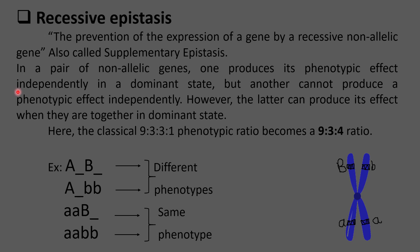In the case of recessive epistasis, there is a pair of non-allelic genes of which one produces its phenotypic effect independently when it is in a dominant state, while another cannot produce a phenotypic effect independently — this particular gene needs the supplementation of the other non-allelic gene to produce its own effect.